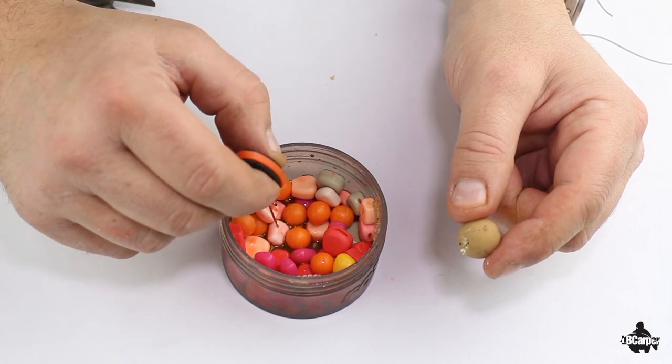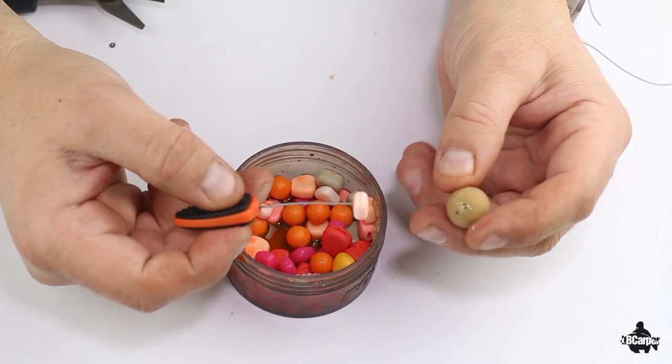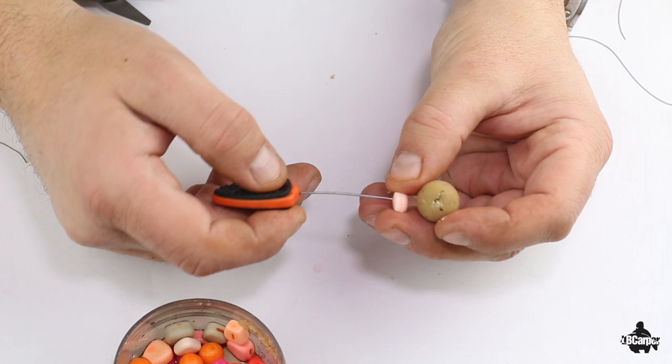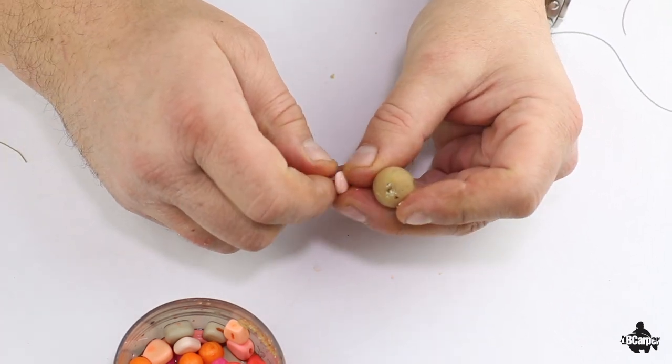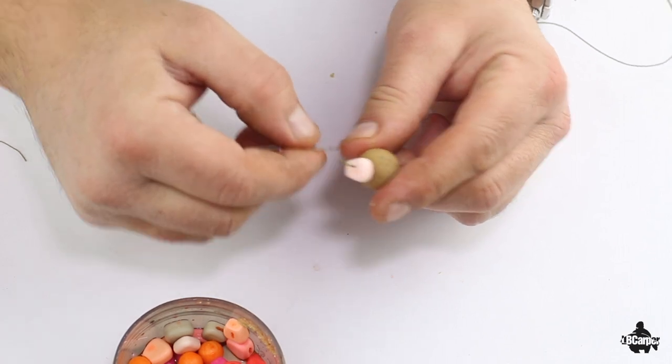So whatever colour you want to use to add that bit of buoyancy. I like white, any colour really that you like—pink, green, yellow, whatever takes your fancy, whatever you feel confidence with. Stick that one on there like that.